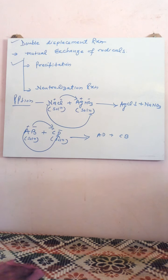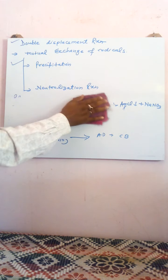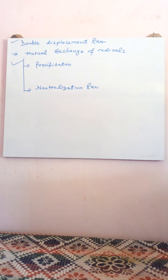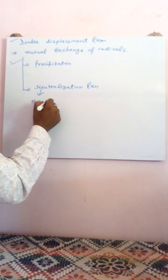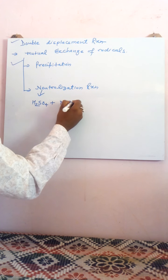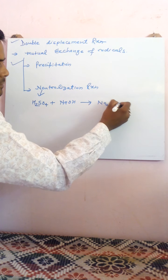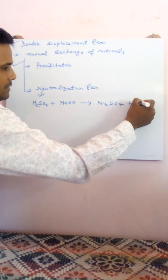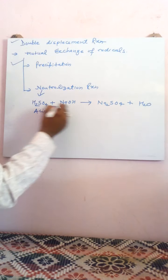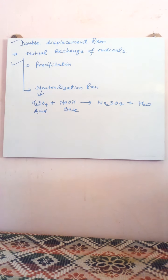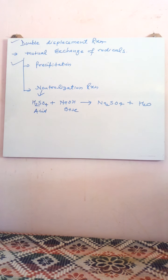Neutralization reaction is a very common type of chemical reaction in which an acid reacts with a base to form salt and water. For example, sulfuric acid plus sodium hydroxide forms sodium sulfate plus water (H₂O). Here sulfuric acid neutralizes the effect of the base sodium hydroxide to form sodium sulfate and water. Whenever an acid neutralizes the effect of a base to form salt and water, the reaction is known as a neutralization reaction. That's all for today, thank you.